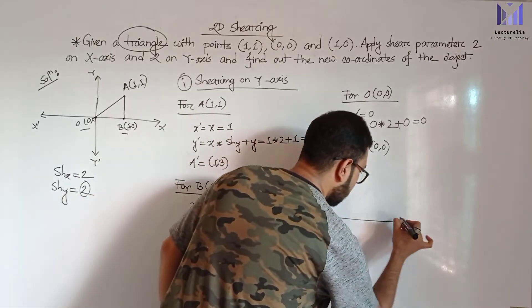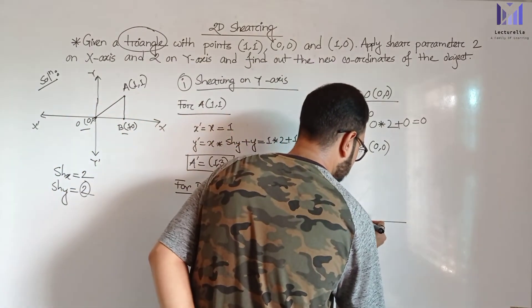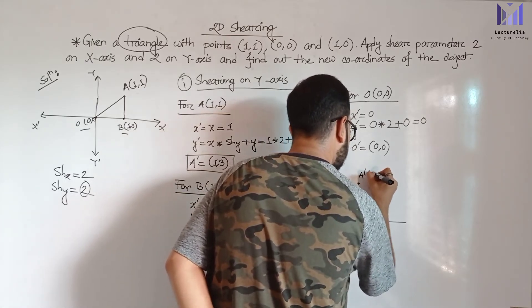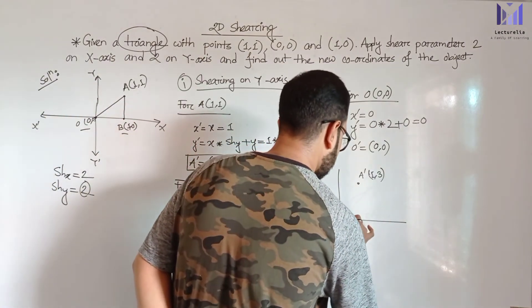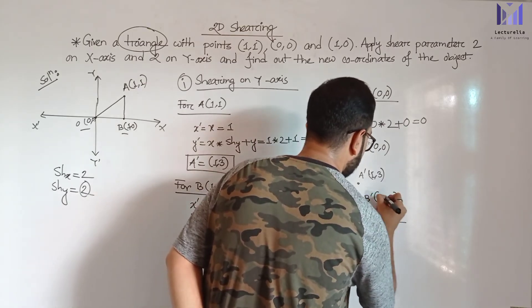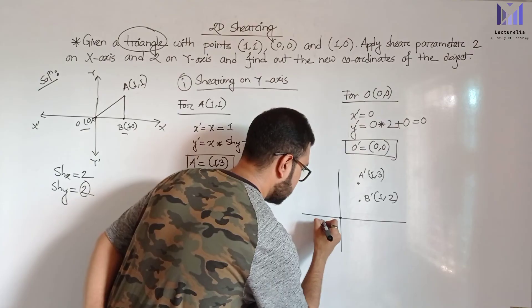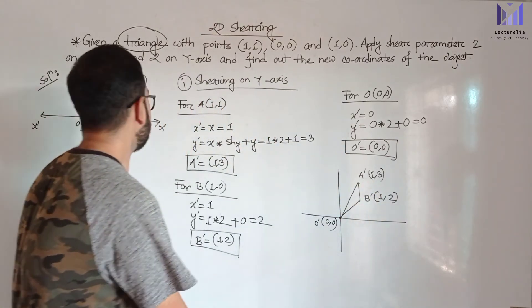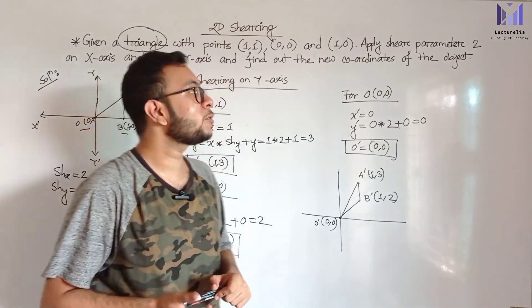So after shearing on Y-axis, we can see the shape has changed. A prime is (1,3), B prime is (1,2), and O prime is (0,0). Connecting these three points gives us the new triangle shape. Initially the object had one shape; after shearing on Y-axis, the shape has changed. We can see how shearing transforms the object.